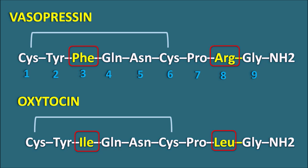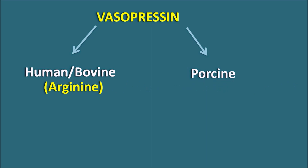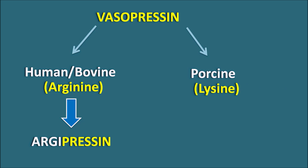Now let us see the different types of anti-diuretic hormones and how they relate to vasopressin. Vasopressin can be derived from two sources: human or bovine source, or from porcine (pigs). When derived from human or bovine source, the eighth position has arginine, and that's why it is called argipressin. When derived from porcine, the eighth position has lysine, and that type of vasopressin is called lypressin. So vasopressin can be of two types — argipressin or lypressin — based on which amino acid is present at the eighth position.